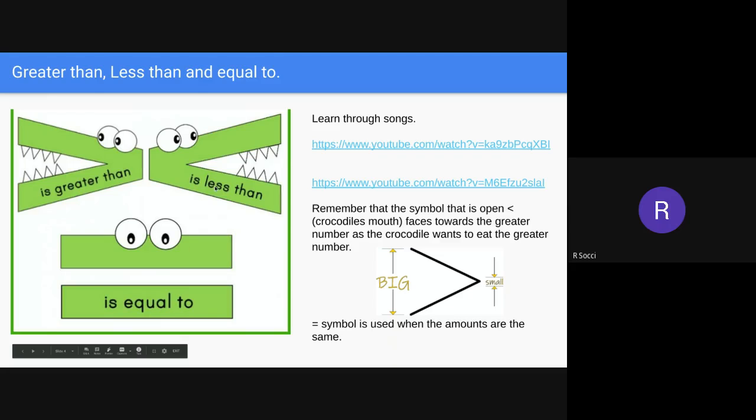Lots of times we talk about how they are the crocodile mouths. If the crocodile's mouth is facing this way it means it's greater than. The big part where it looks like the mouth is open, we want that to face the bigger number because the crocodile wants to eat the greater number. You would point it towards the bigger number just like this.